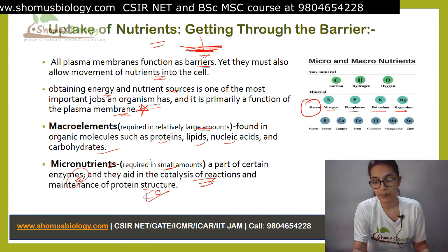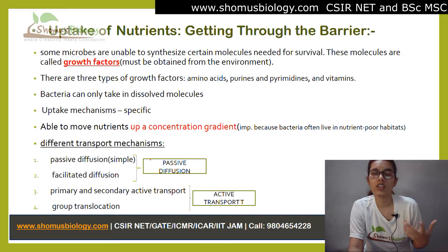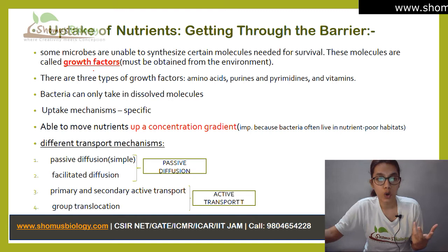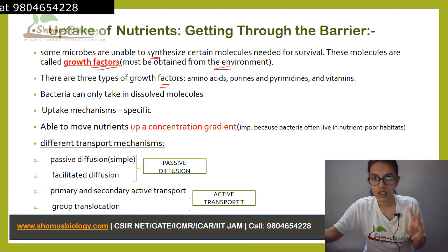Both are very much important. Now, if we say there are some molecules needed for survival but the bacterial cell cannot synthesize these molecules, they have to take them from the outside environment. These particular molecules are called growth factors. The bacteria themselves cannot synthesize them and that's why they need to obtain them from outside. There are three types of growth factors: amino acids, purines, pyrimidines, and vitamins.